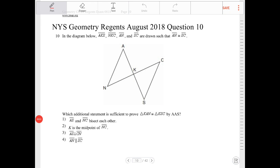In the diagram below, AKS, MKG, AN, and SC are drawn such that AN is congruent to SC.